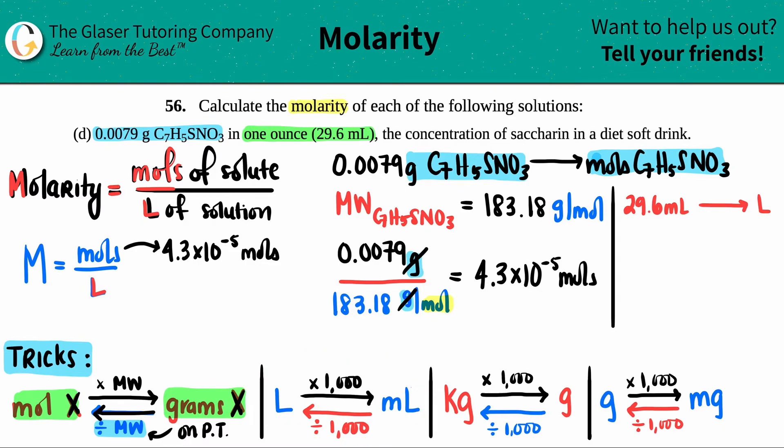Here's a quick trick: if you're starting with milliliters and you want to go to liters, all you have to do is take that milliliter value and divide by 1000. Similarly, you can take the decimal and move it to the left three times and fill in the spaces with zeros. Either way, 29.6 divided by 1000 is 0.0296 liters.